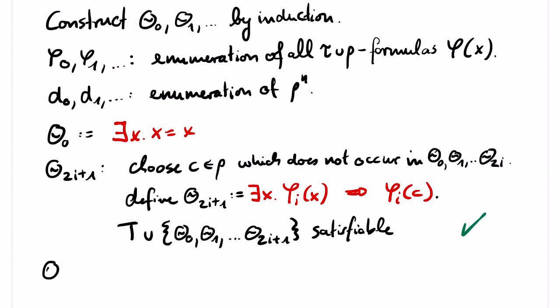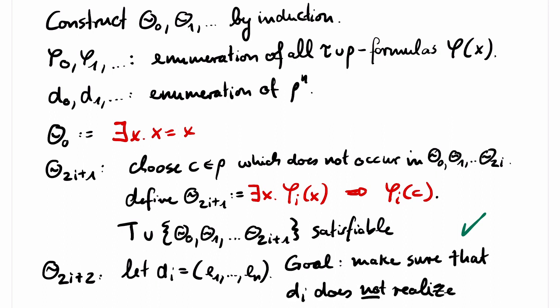For even indices 2i plus 2, let d i be the n-tuple of constants e1 up to en. The goal of this step is to make sure that d i does not realize P. I will explain how to do this on the next page, but note that this proof has an interesting structure that makes it easy to remember.